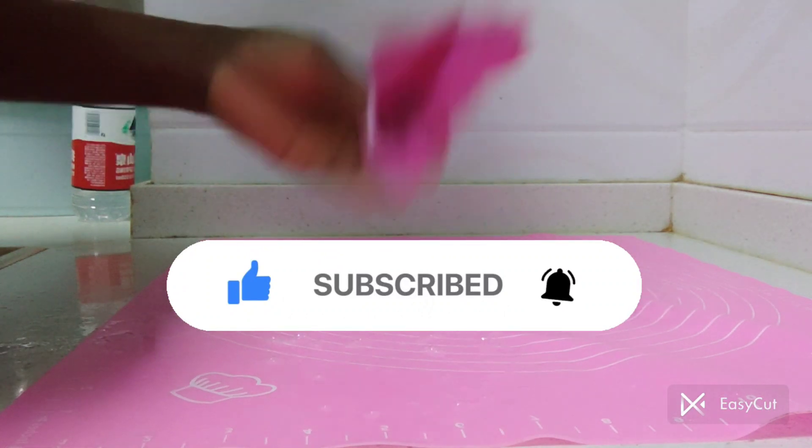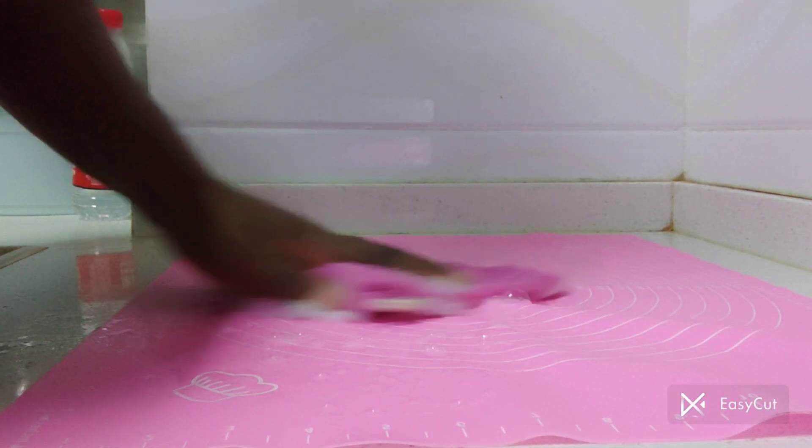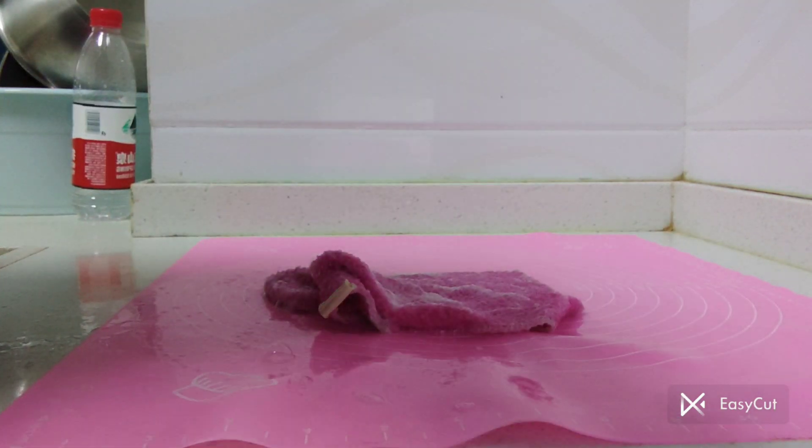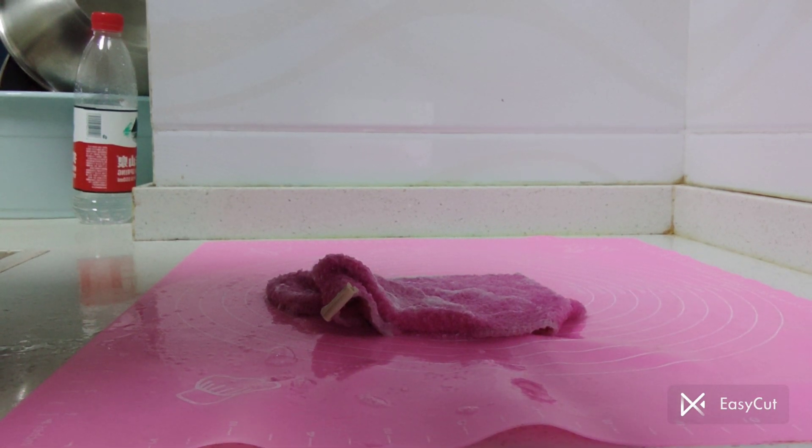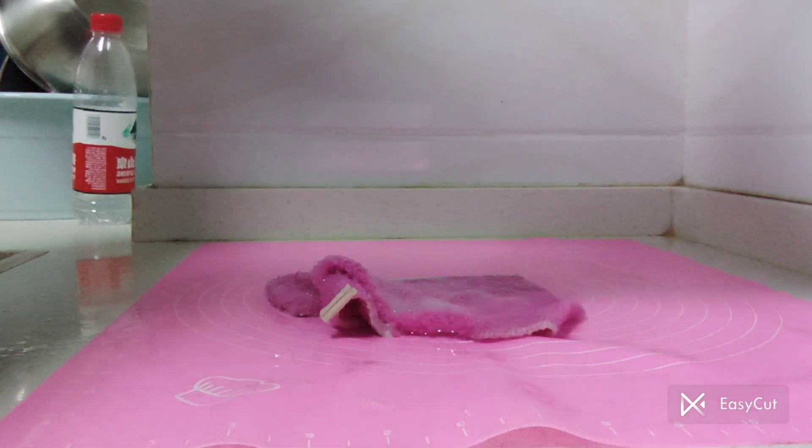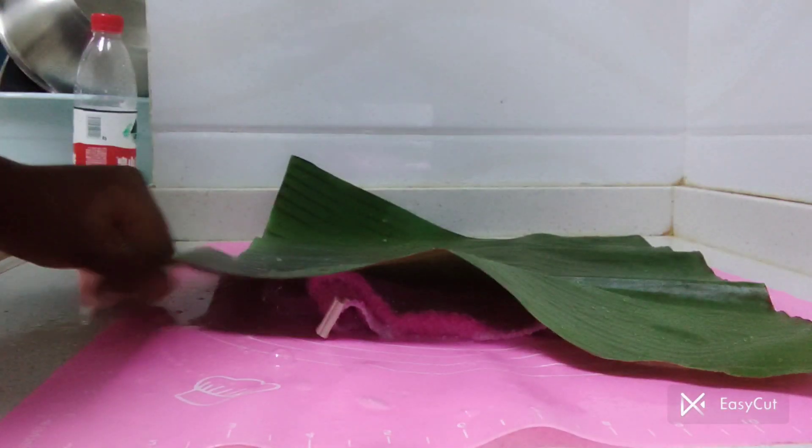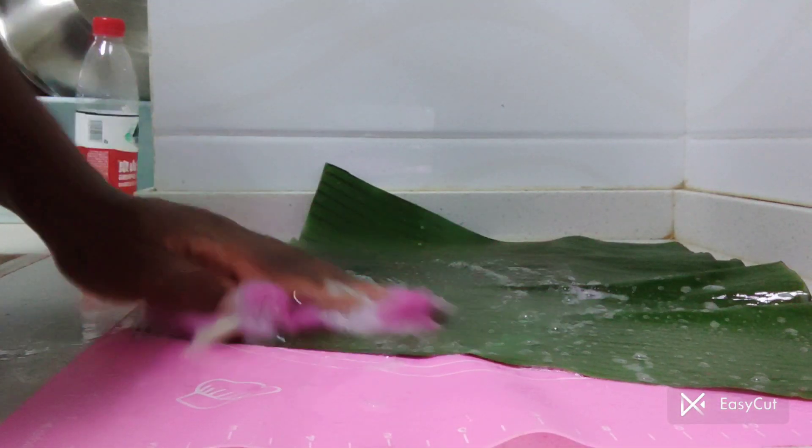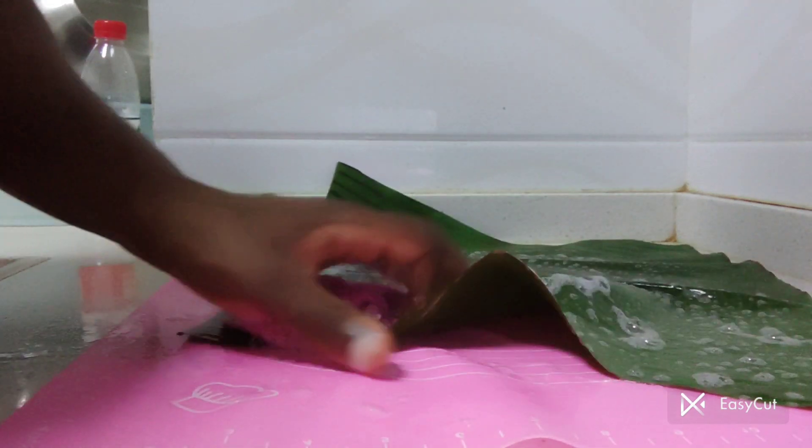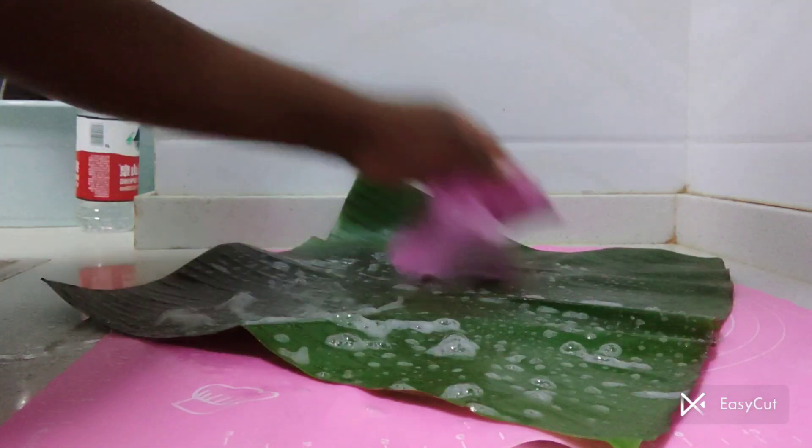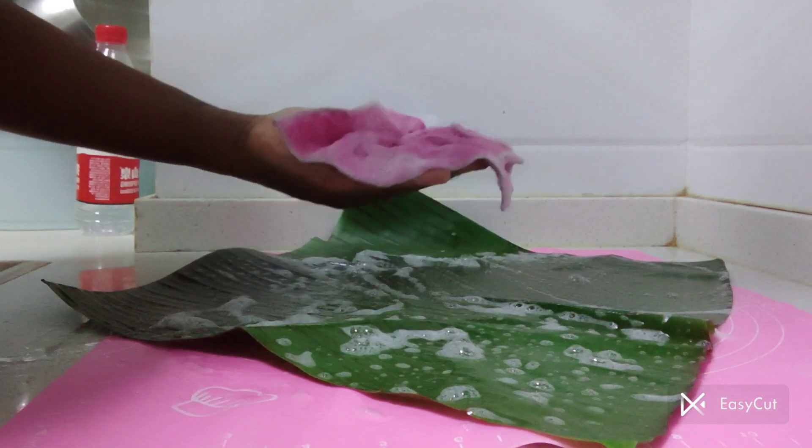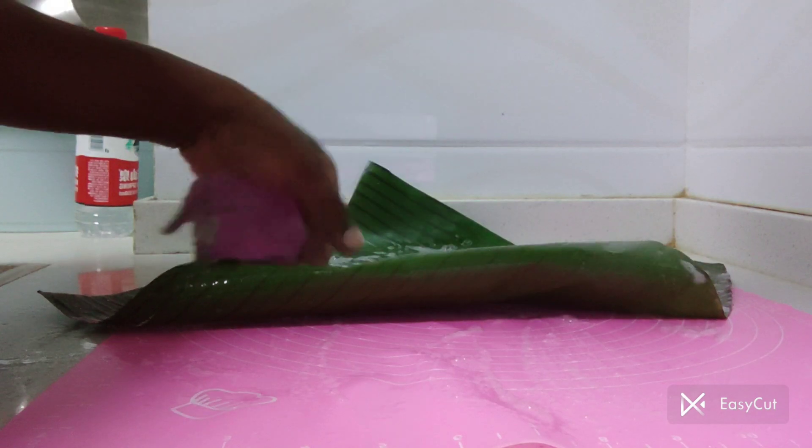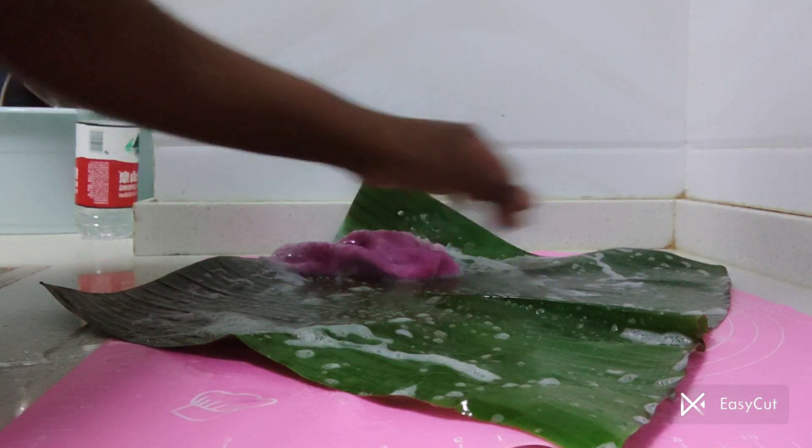Now it's time for me to start washing them. This is my sponge and soap on my work surface. I will spread the leaves on this work surface and scrub them one after the other. After scrubbing, I'm going to rinse them thoroughly. I'll scrub both parts of the leaf, beginning with the front part. Make sure you scrub gently so you don't tear the leaf.